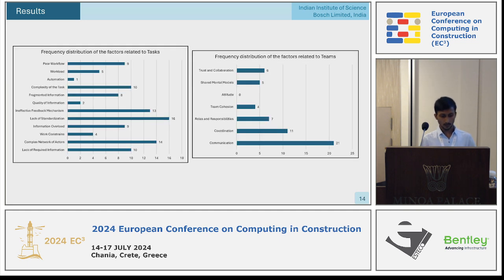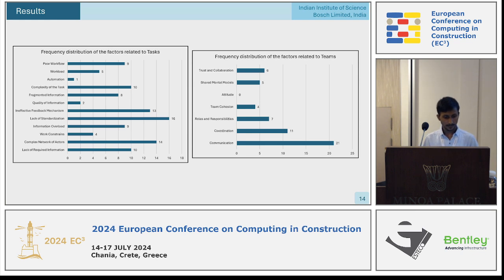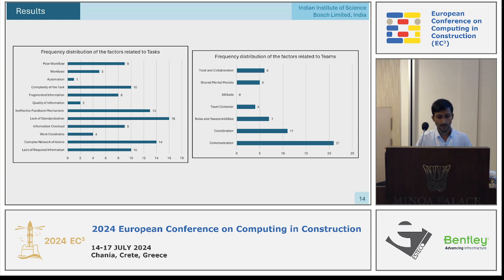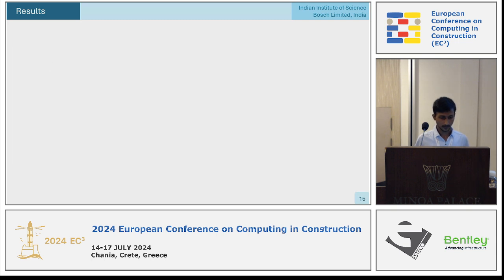There are two more aspects: task and domain related factors, and team related factors. In the task aspect, lack of standardization of processes, complex network of actors, and ineffective feedback mechanisms are the most responsible factors. In the teams aspect, coordination and communication comes as the most responsible factor for impacting situation awareness in this particular work system.